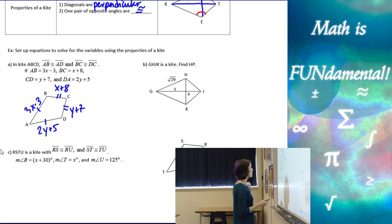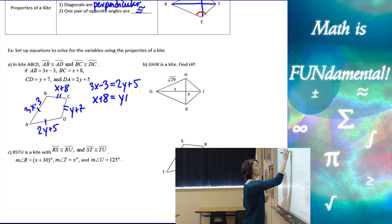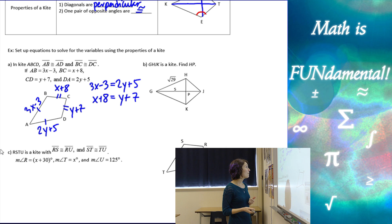So now, if I look at my information and pair up my congruent sides, I have 3x minus 3 equals 2y plus 5, but I can't solve for x and y with that equation because I have two unknowns. Lucky for us, we have another set of congruent sides, so I can make two equations with two unknowns, and then I can solve using substitution or elimination.